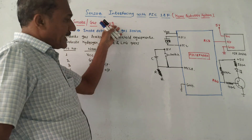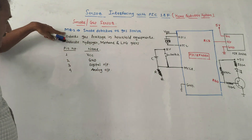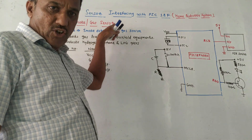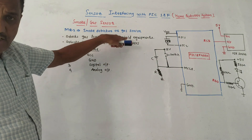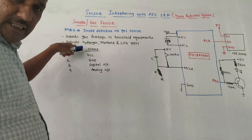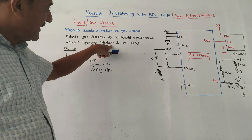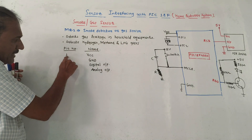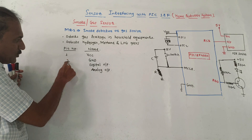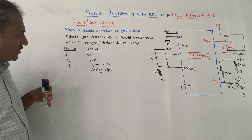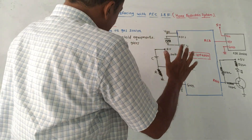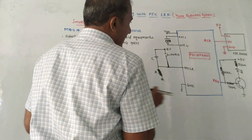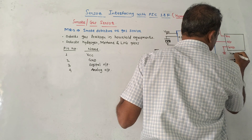Next is the smoke or gas detection sensor — this is the MQ2 sensor. It is used as a smoke detector or gas detector, and can detect leakage in household appliances. It is basically used to detect hydrogen, methane, as well as LPG gases. The pin numbers are: pin 1 is VCC, pin 2 is ground, pin 3 is digital output, and pin 4 is analog output. The interfacing diagram is the same as discussed — the only change is replacing PIR sensor with MQ2 sensor.